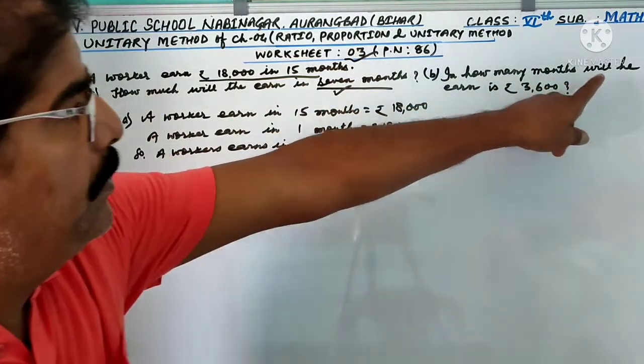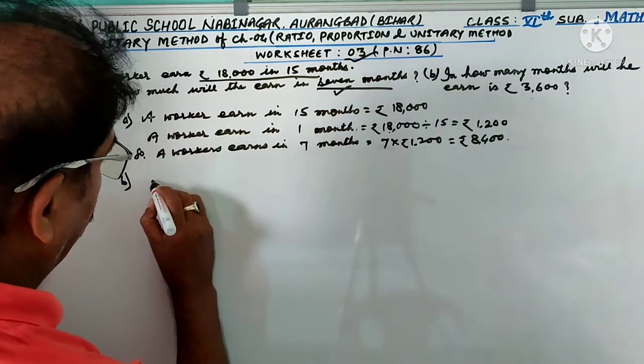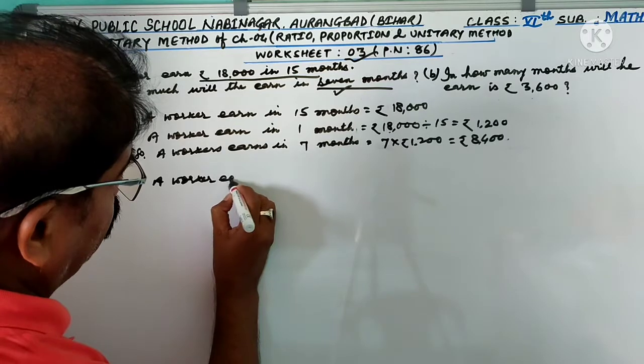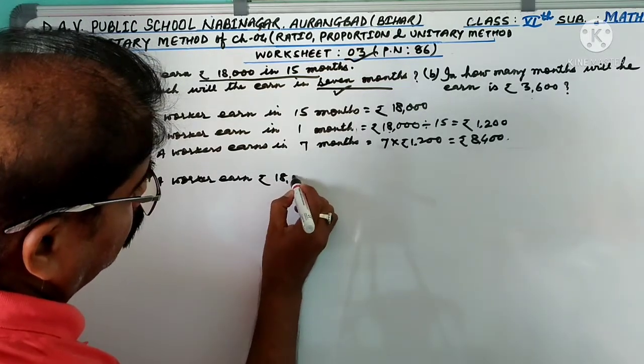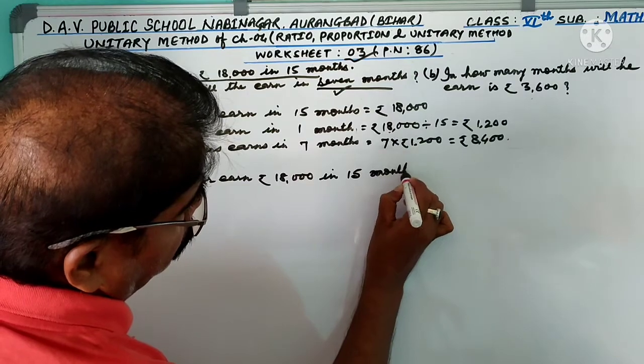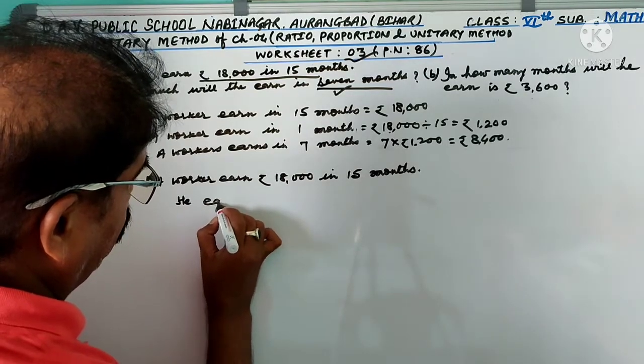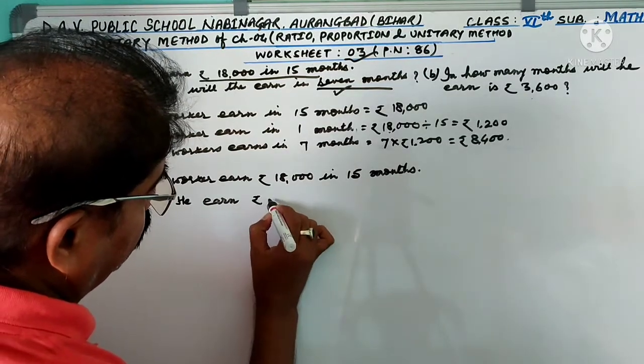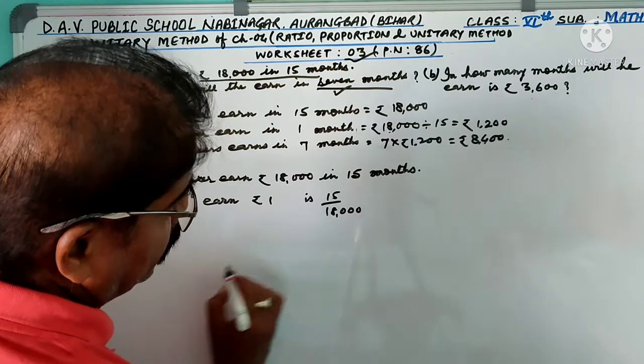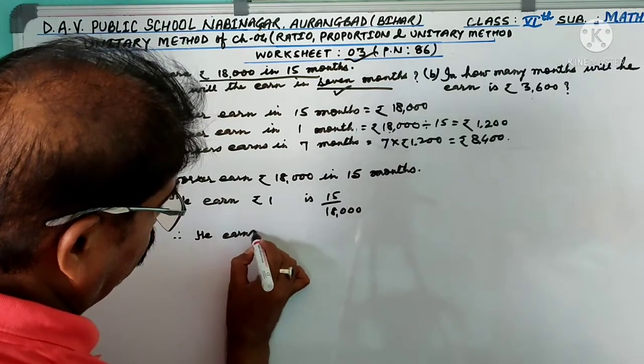In how many months will he earn Rs 3,600? In essence, he earned Rs 18,000, means in 15 months. So he earned Rs 1 in 15 by 18,000.